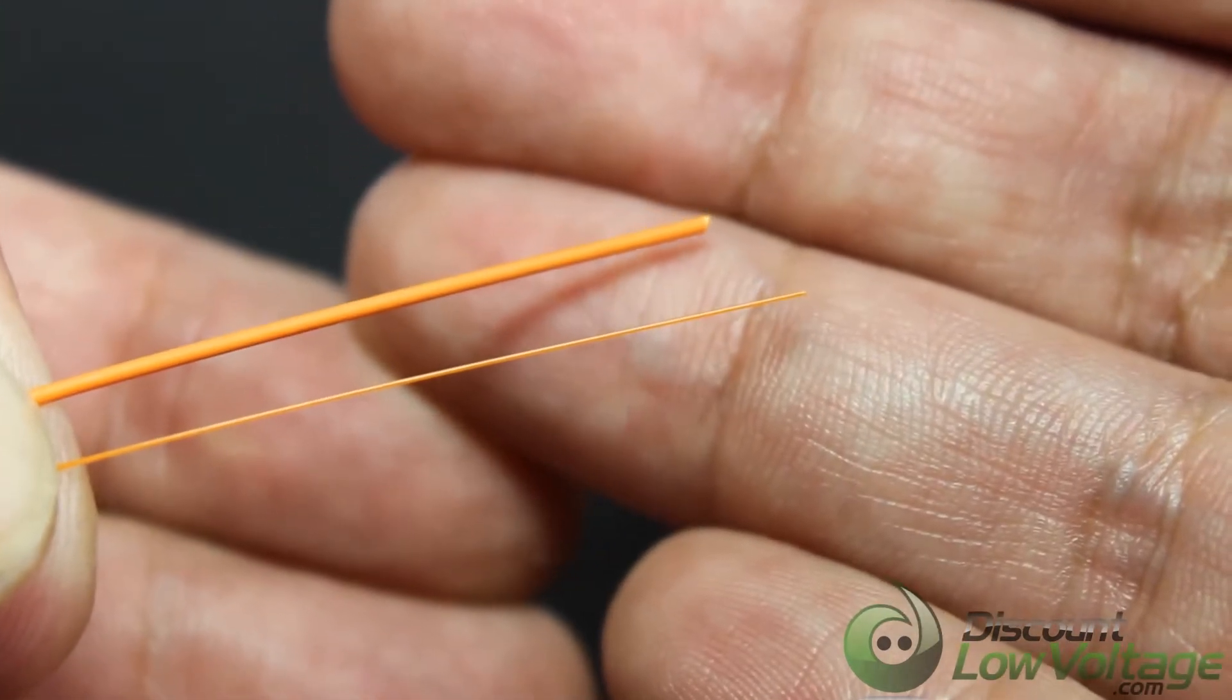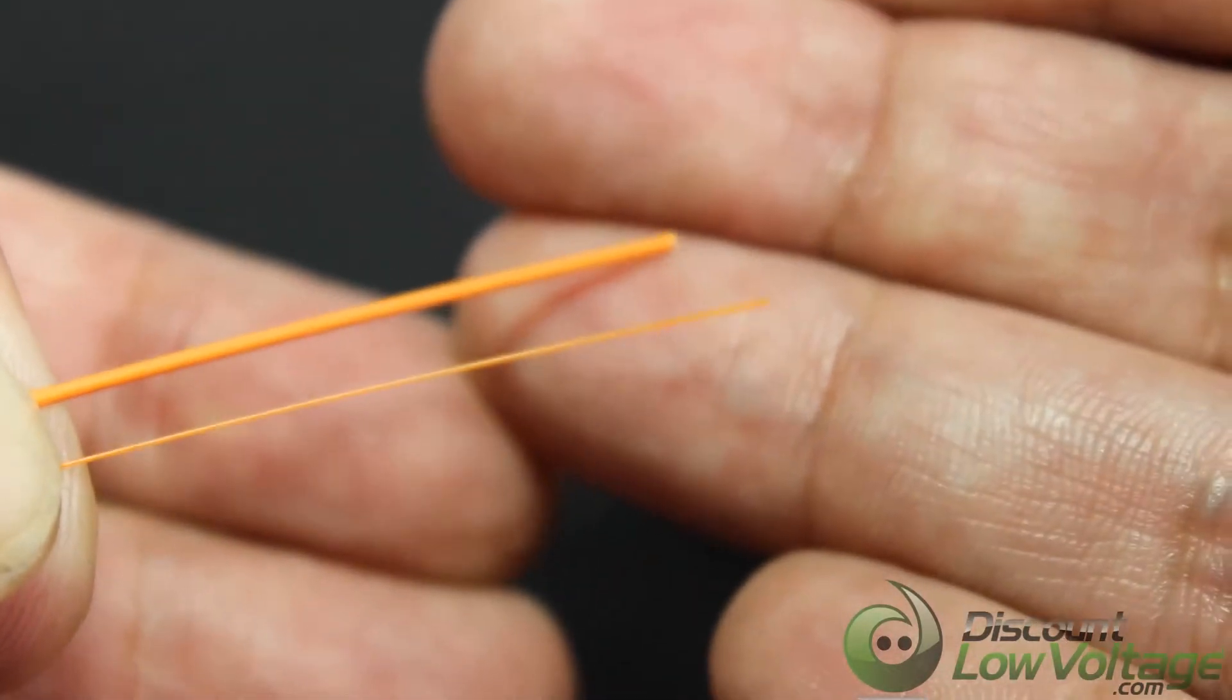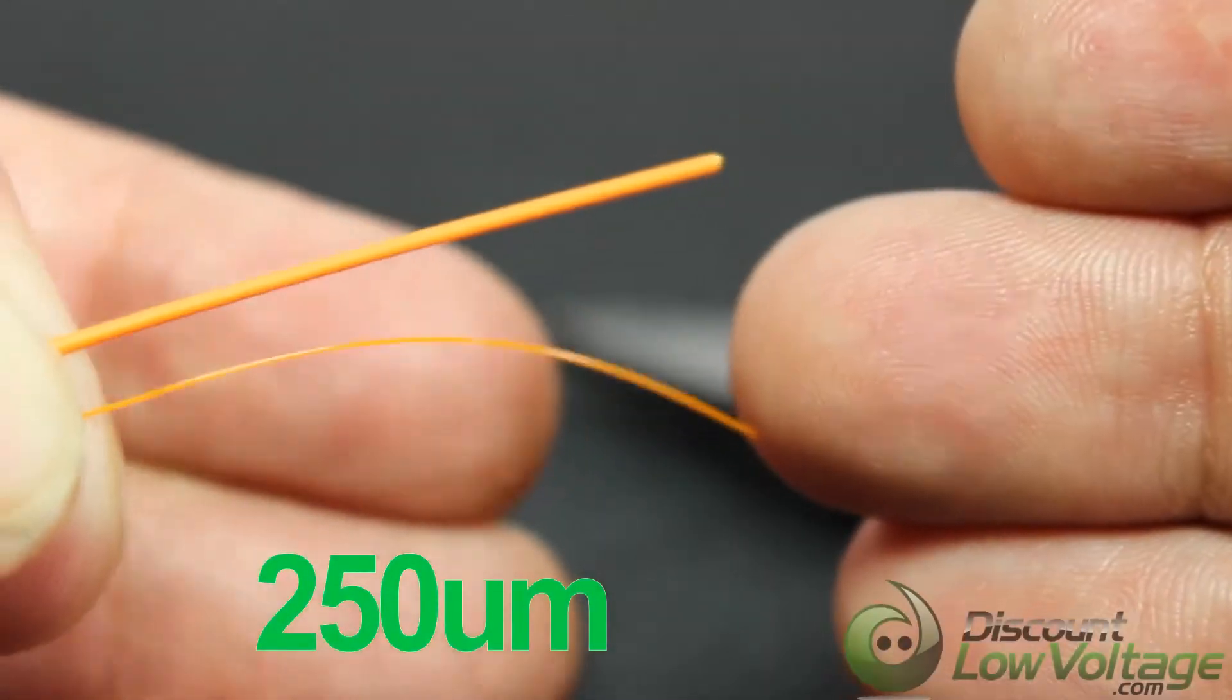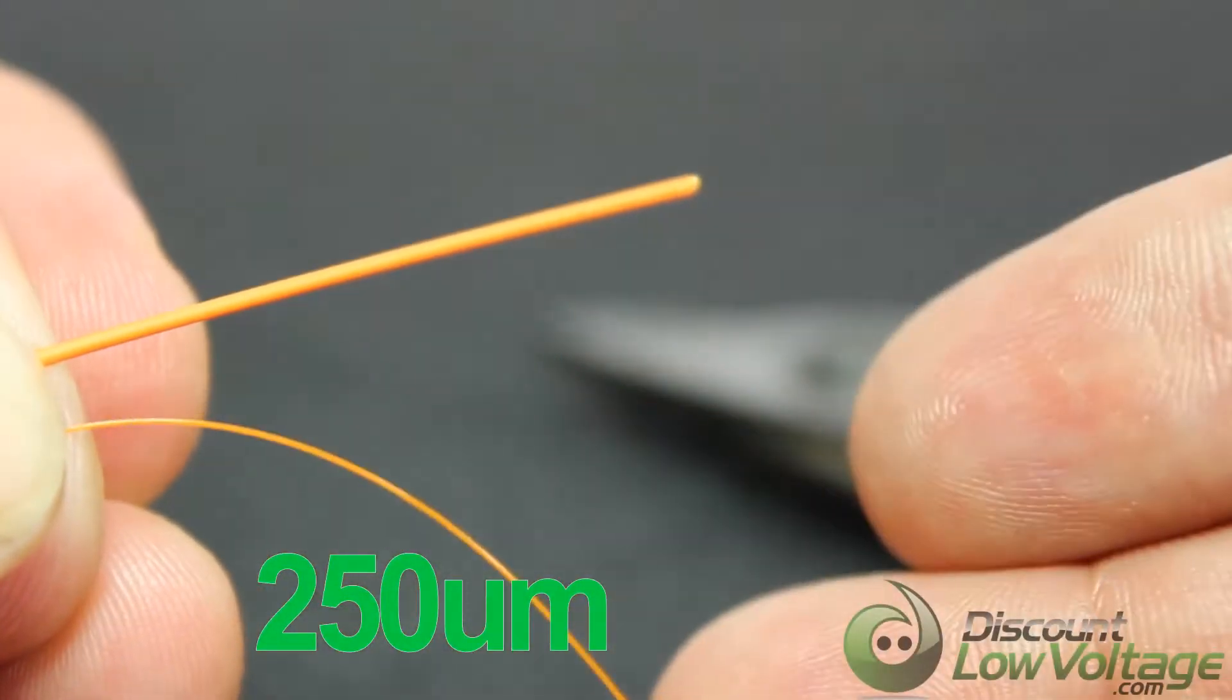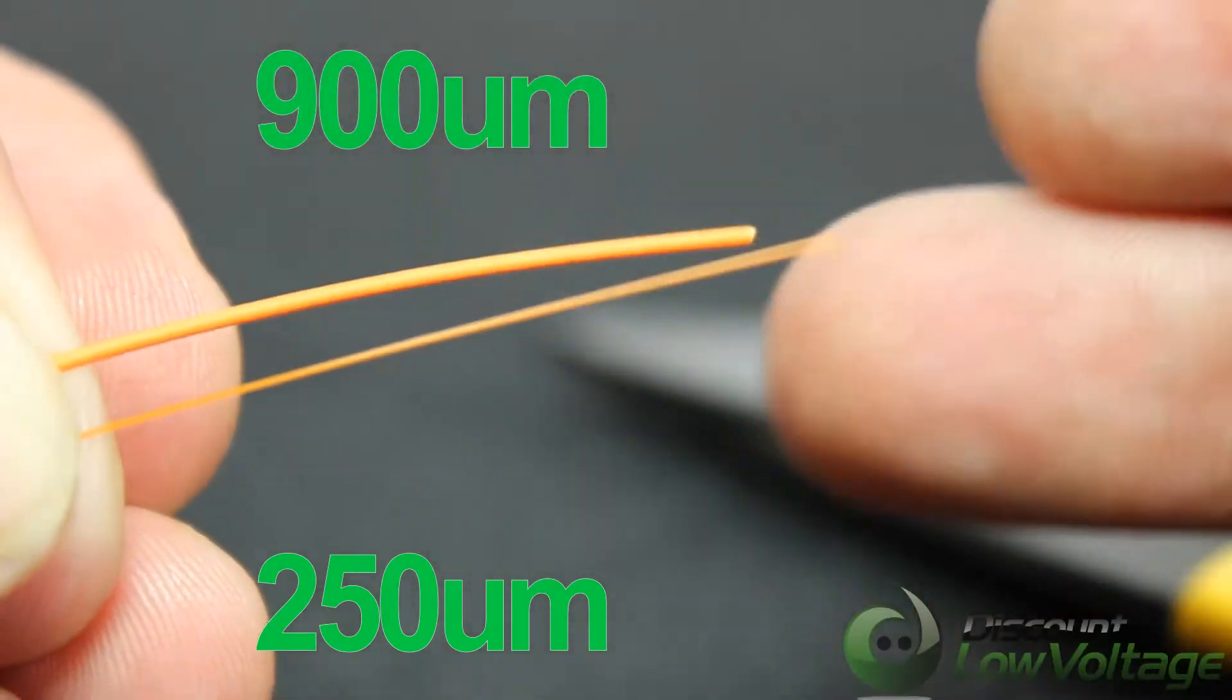Now you have two fibers, you have the buffer here. I just wanted to show you two different sizes. You have your 250 which is obviously small, and then you have your 900 which is also pretty small.